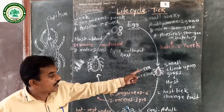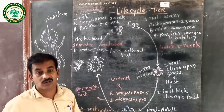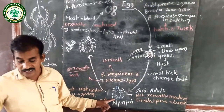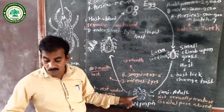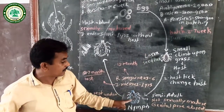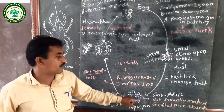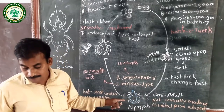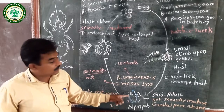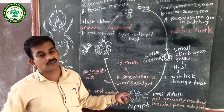After the larva molts, it produces the third stage called the nymph stage. The nymph is similar in appearance but very small in size. In the nymph stage, four pairs of legs are developed — this is the difference between the larva and the nymph. However, the nymph is not sexually mature; the genital pore is absent. Due to hot weather, the nymph goes to rest under the grass or trees.